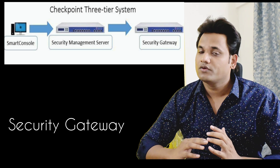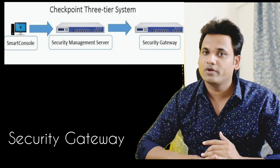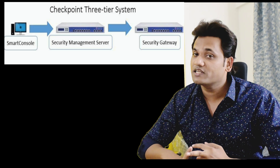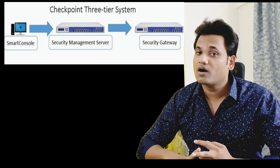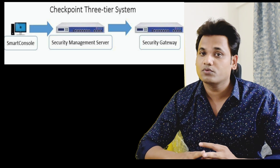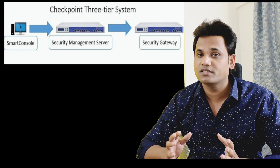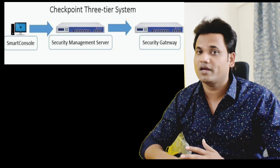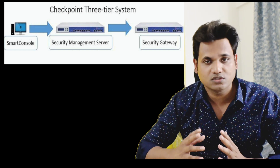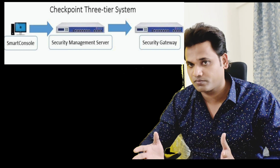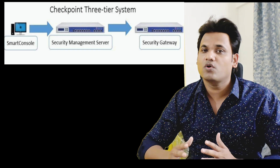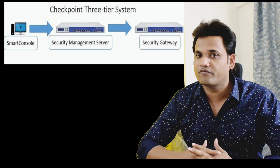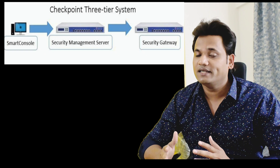So using Smart Console you write the configuration, using Smart Management Server you store it, and then it gets pushed to the Security Gateway where things come into effect. This is the three-tier architecture of the Checkpoint firewall.